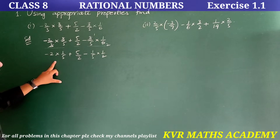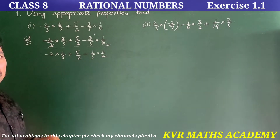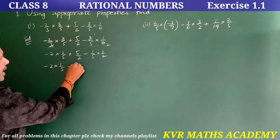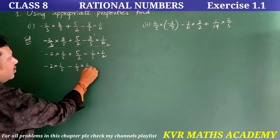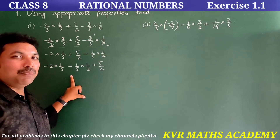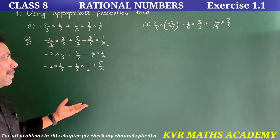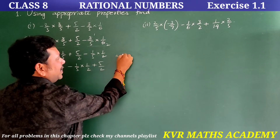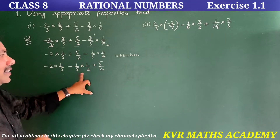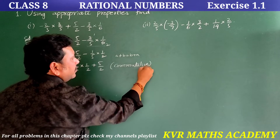In the first term, 1 by 5 is there, and in the last term, 1 by 5 is also there. So we rearrange these: minus 2 into 1 by 5, then minus 1 by 5 into 1 by 2, plus 5 by 2. We have rearranged using the Commutative Property — since A plus B equals B plus A, that is the commutative property.